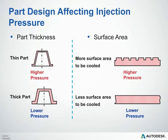Part design affects injection pressure as well. Part thickness plays a role — a thin part will have a higher pressure, while a thicker part will have a lower pressure. Surface area can also impact injection pressure. More surface area typically means the part cools faster, resulting in higher pressures. Less surface area means the part cools more slowly, allowing it to fill at a higher temperature, which lowers the required pressure.